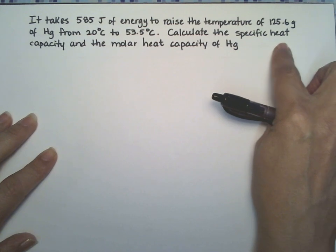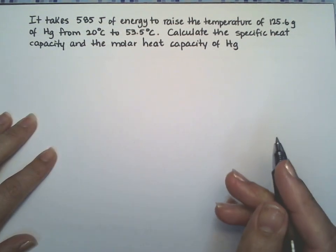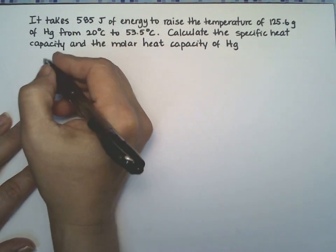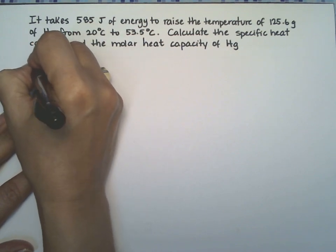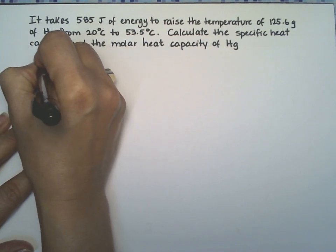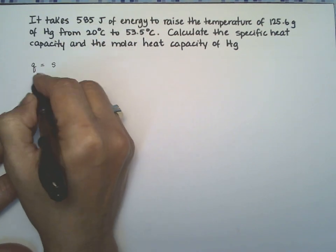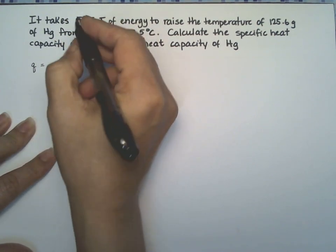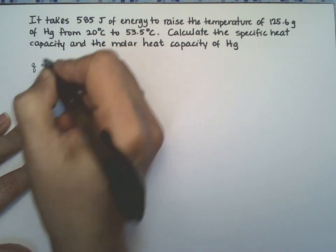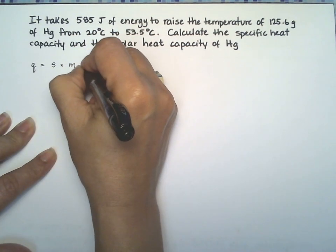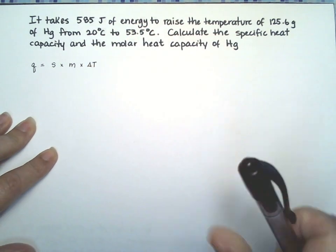Let's start with the specific heat capacity, which is represented by a lowercase s. We have to go back to this formula that we've seen before: heat equals the product of the specific heat capacity, the mass, and the change in temperature.